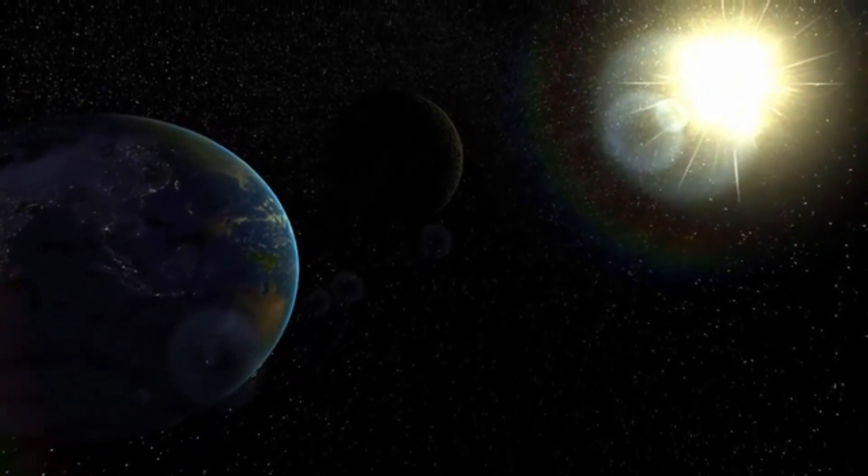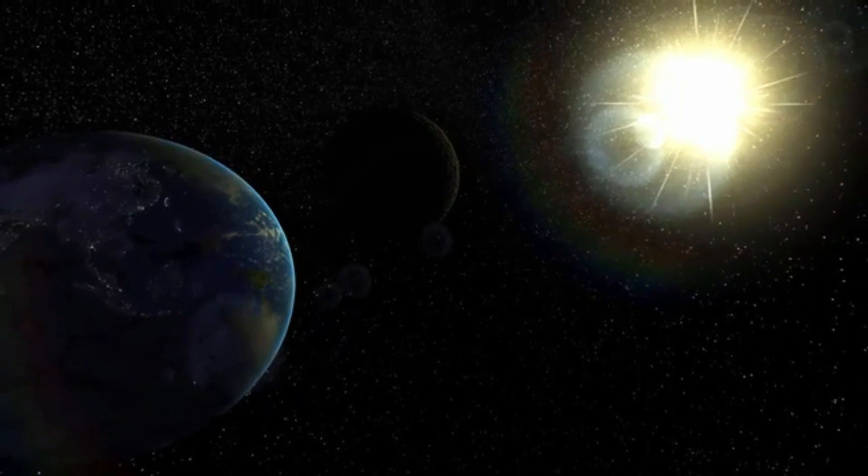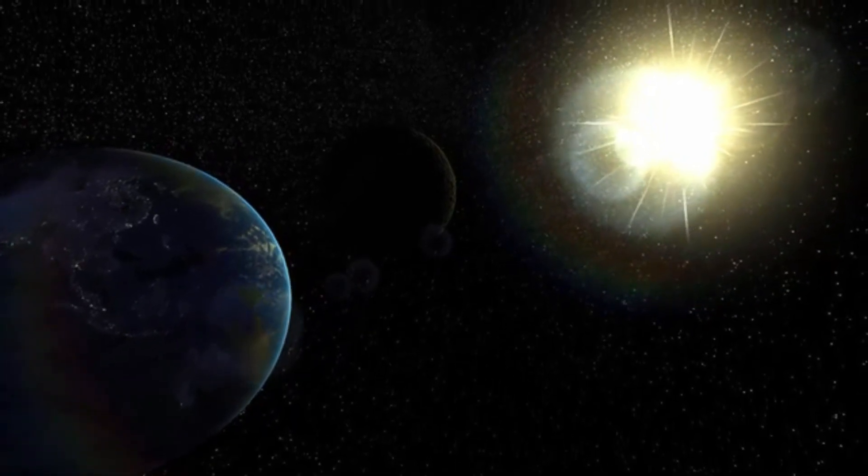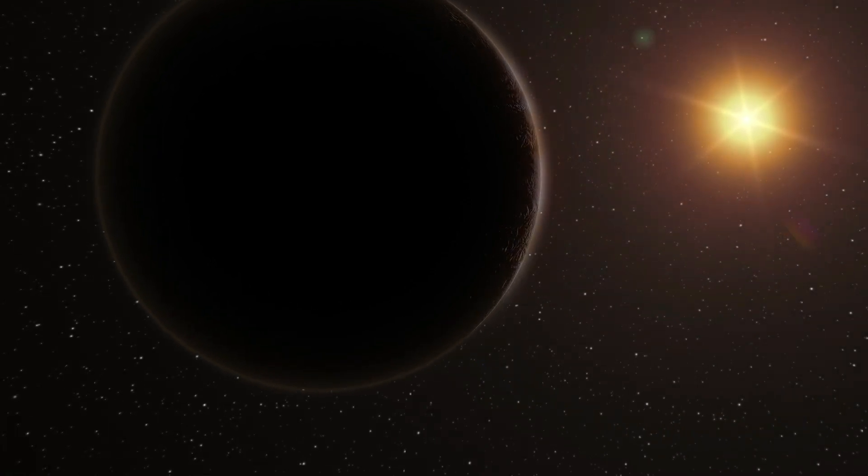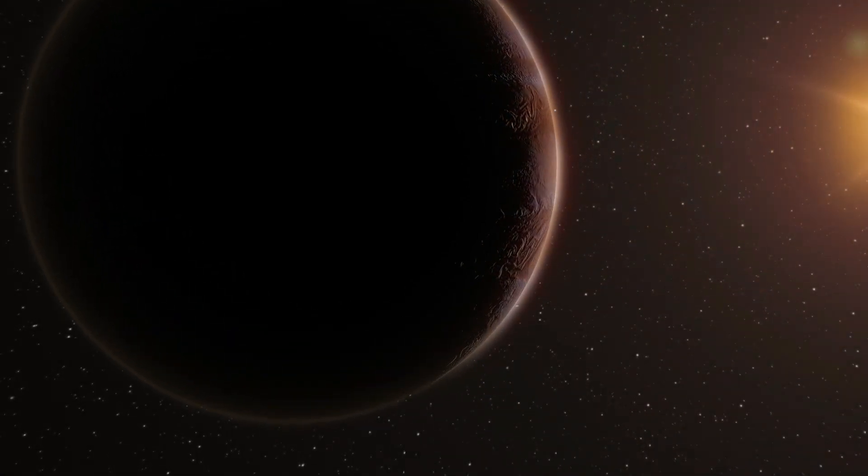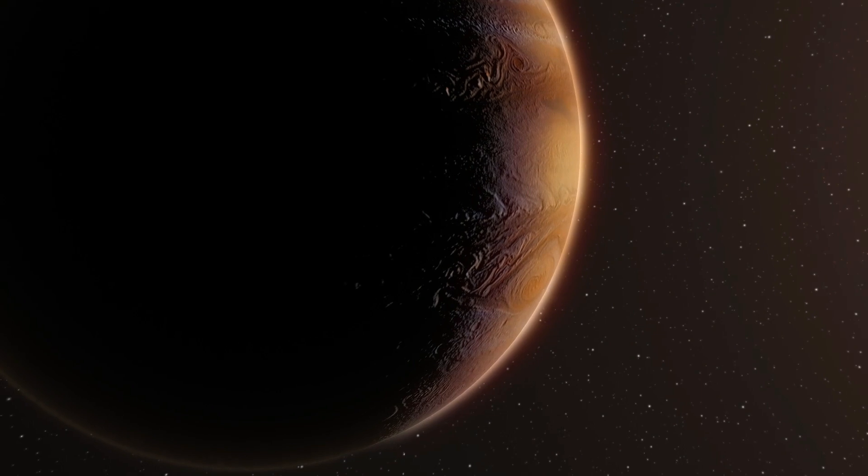Exciting news from the cosmos! The James Webb Space Telescope has made a stunning breakthrough in our exploration of the cosmos by capturing the clearest image yet of Proxima b, the closest known exoplanet to our solar system.